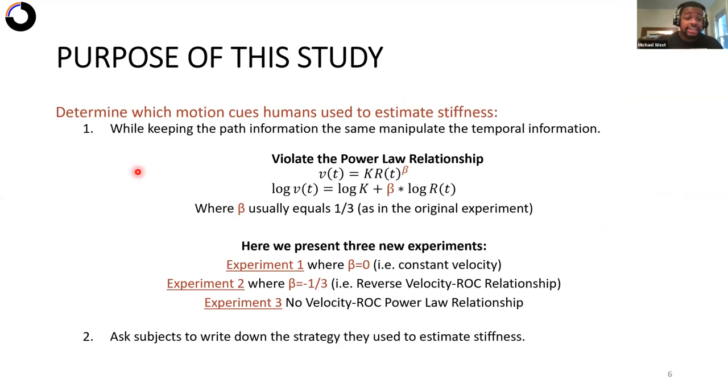And the way we did this was through two methods. And the first was, while keeping the path information the same from our previous experiments, we manipulated the velocity profile, the temporal information. And what that means is generally in our first simulations, these have been consistent with the literature of this two-thirds power law, which is just this mathematical relationship here. And what it relates is radius of curvature to velocity via this exponent beta,